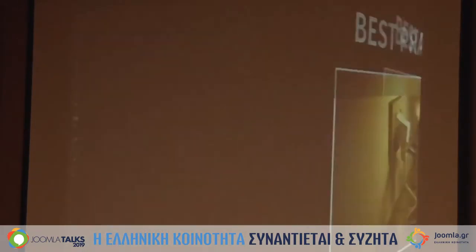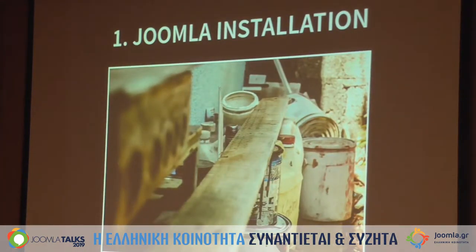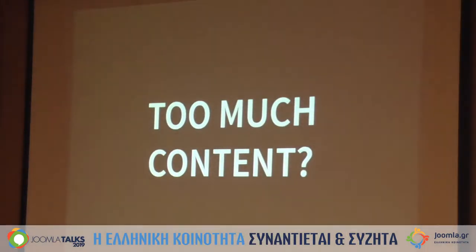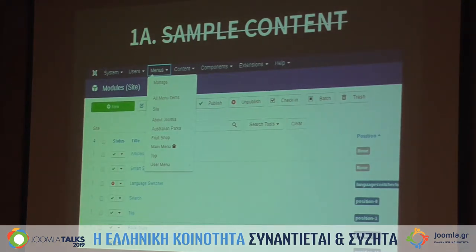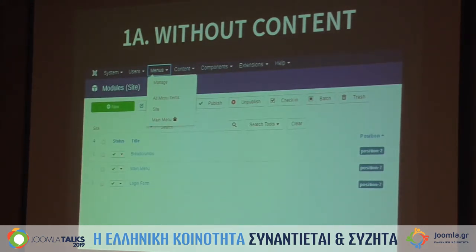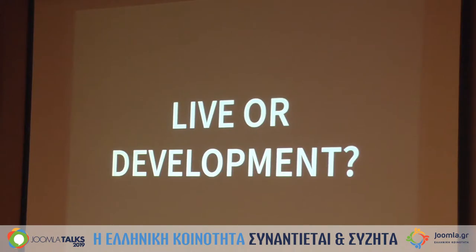Now I'll continue with the best practices. First, the Joomla installation. If you install Joomla you will have a lot of content, especially if you install sample content. I recommend doing it the other way — just install Joomla without content and build everything up from there. The sample content is convenient to see how it works, but it's only an example. I also recommend developing on your local computer rather than directly on the server, because it's easier to add media and faster than uploading everything.